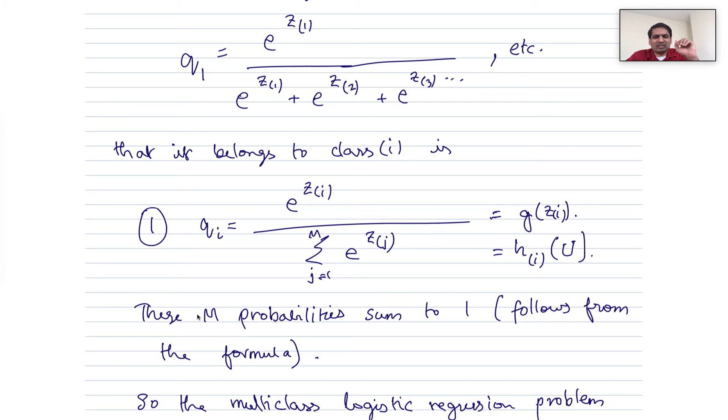And the nice thing here is that these m probabilities will actually sum to 1, because if you actually sum the m expressions that have this form, except the numerator has 1, 2, 3, 4, whatever, if you sum all of them for the sum, the numerator will actually be equal to the denominator, and of course the sum of the probabilities will be equal to 1. So in other words, sum over qi over all the classes will be equal to 1.